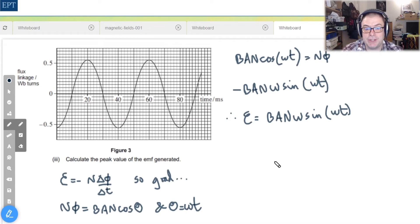So now it's a question of considering when will this value of EMF be greatest and of course it's going to be at the point where sine ωt reduces down to the value one. In other words we can say that the EMF maximum is going to be B A N ω.